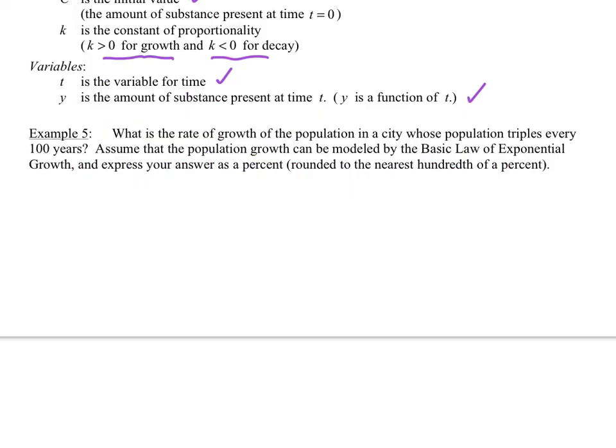So for example, number five, this looks like just a pre-calculus problem. What is the rate of growth of a population in a city whose population triples every hundred years? Assume the population growth can be modeled by the basic law of exponential growth. So y = Ce^(kt). Okay, so then we do know that we're looking for the population tripling.